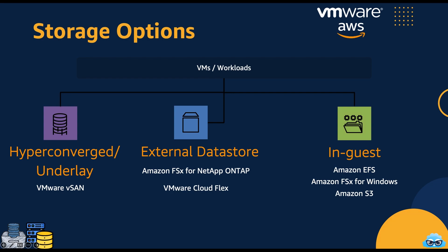Within VMware Cloud on AWS, storage options fall into three distinct categories. Hyper-converged storage, provided by VMware vSAN, offers a seamlessly integrated and high-performance storage solution. External datastores — integration with solutions like Amazon FSx for NetApp OnTap and VMware Cloud Flex — enhances your storage capabilities, providing flexibility and scalability. In-guest storage leverages native AWS services, tapping into the rich ecosystem of AWS services for specific use cases. These categories cater to a wide range of storage needs, ensuring you can choose the right solution to match your workload requirements.